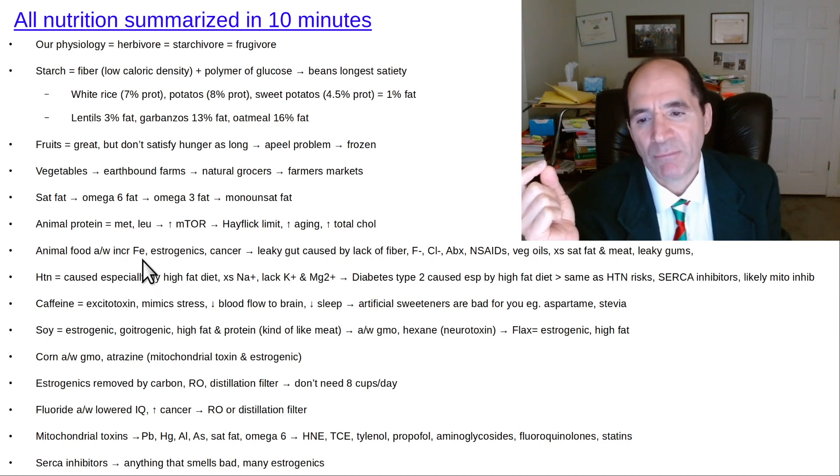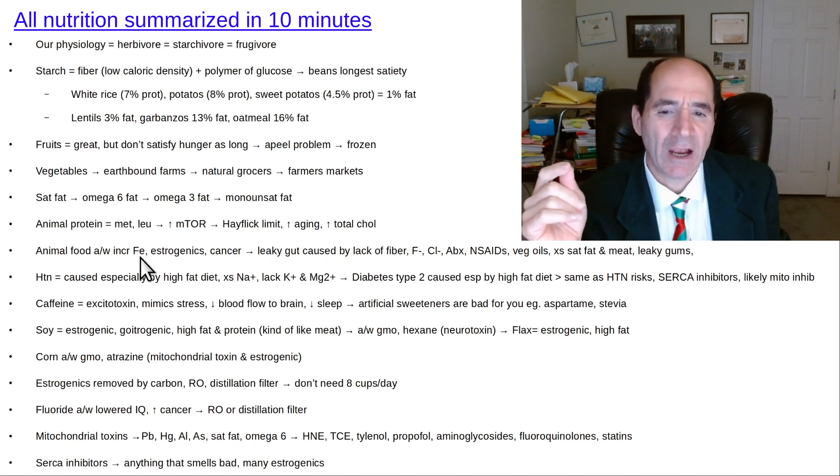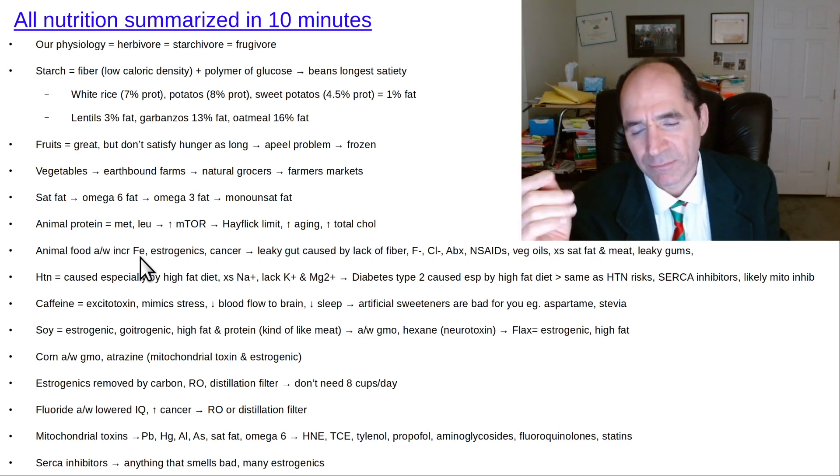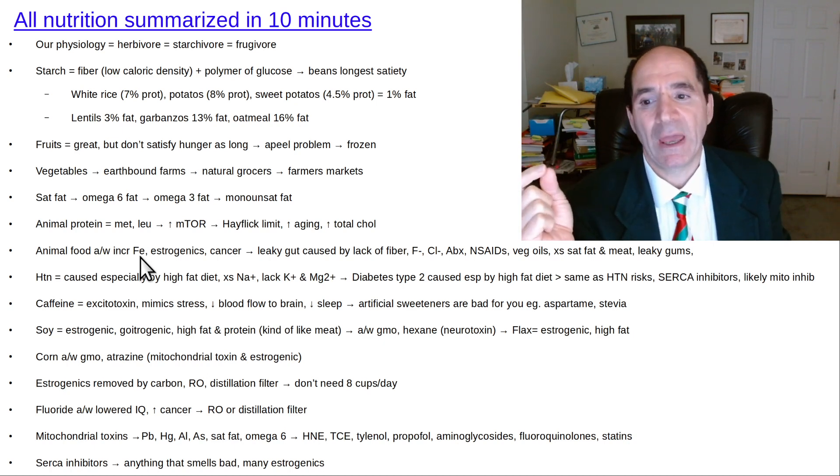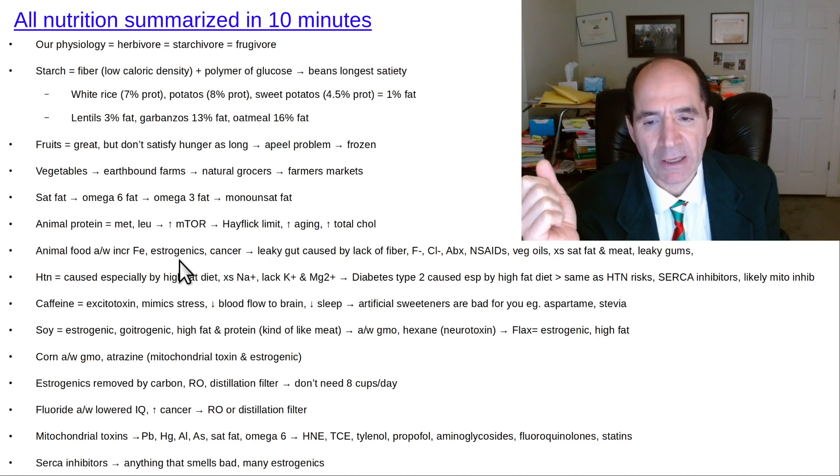Animal food also tends to have more iron, especially red meat. But you also get increased iron in any type of processed food that's fortified or has iron added to it, which a lot of them have. Animal foods often have a lot of estrogenic chemicals given to make the animals grow faster. They're all bad. That's why I recommend zero animal foods.